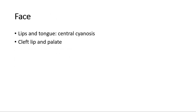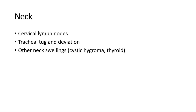Look at the face of the child. Assess the lips and tongue to look for central cyanosis, and also check whether there is any cleft lip or palate. For the neck, cervical lymph nodes are best palpated from behind the child with the child sitting up, and this is usually done at the end of the respiratory system examination. Also look for tracheal tug and tracheal deviation, and whether there are any other neck swellings such as cystic hygroma or thyroid swelling.